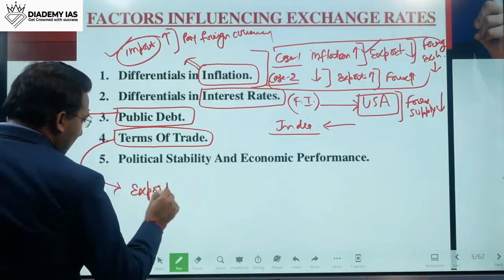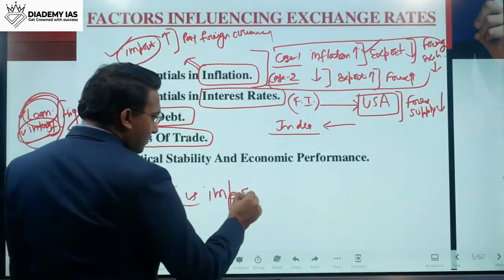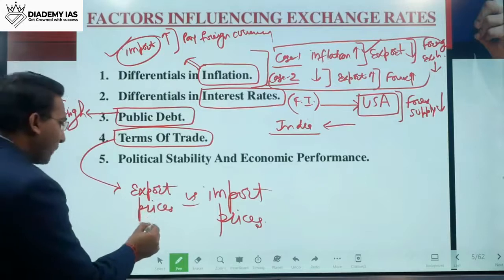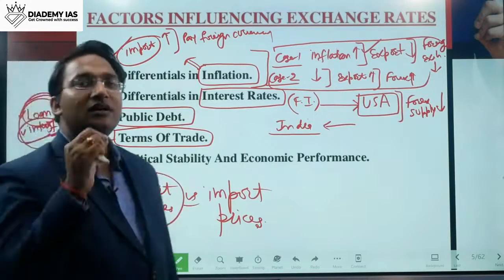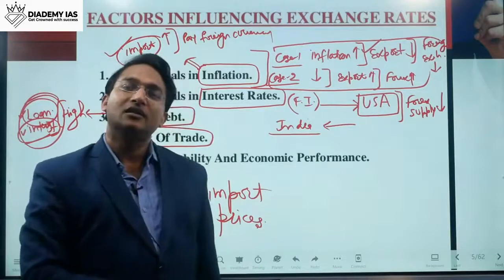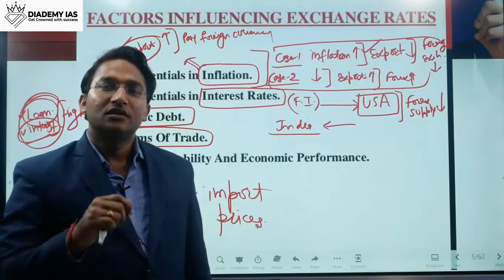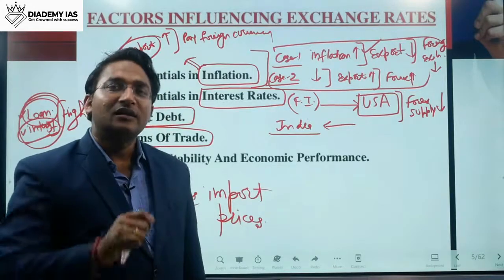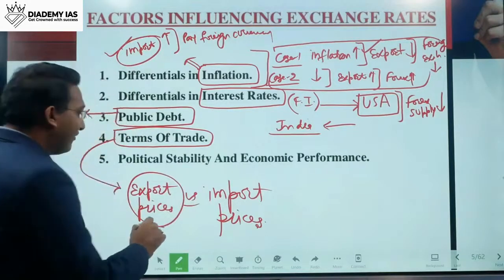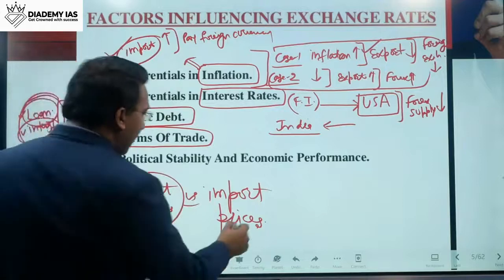The next factor is terms of trade, which means export prices versus import prices. If the export prices of Indian goods are very good, their export potential is high, meaning more foreign currency will come in — increasing its supply. As a result, the value of foreign currency will go down and the value of domestic currency will go up.